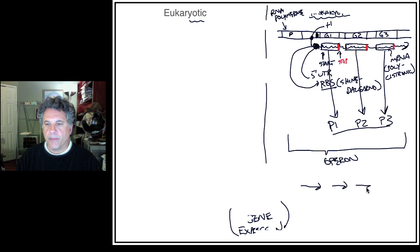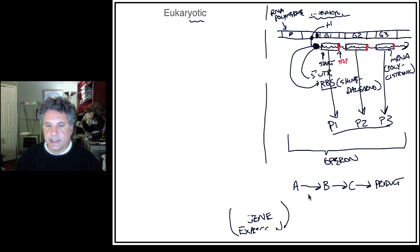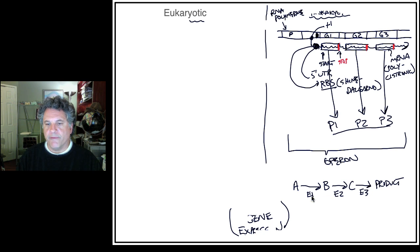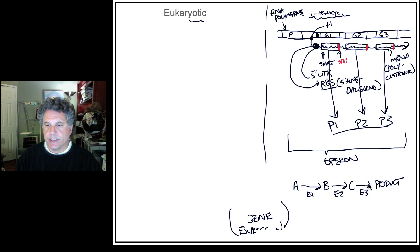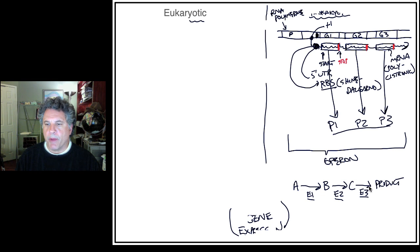If we have a biochemical pathway converting compound A to B to C to a product in an anabolic pathway, each step is catalyzed by enzyme 1, enzyme 2, and enzyme 3. The three proteins encoded by this hypothetical operon are those enzymes. A common messenger RNA allows for the coordinate expression of all three enzymes so that the biochemical pathway can run.